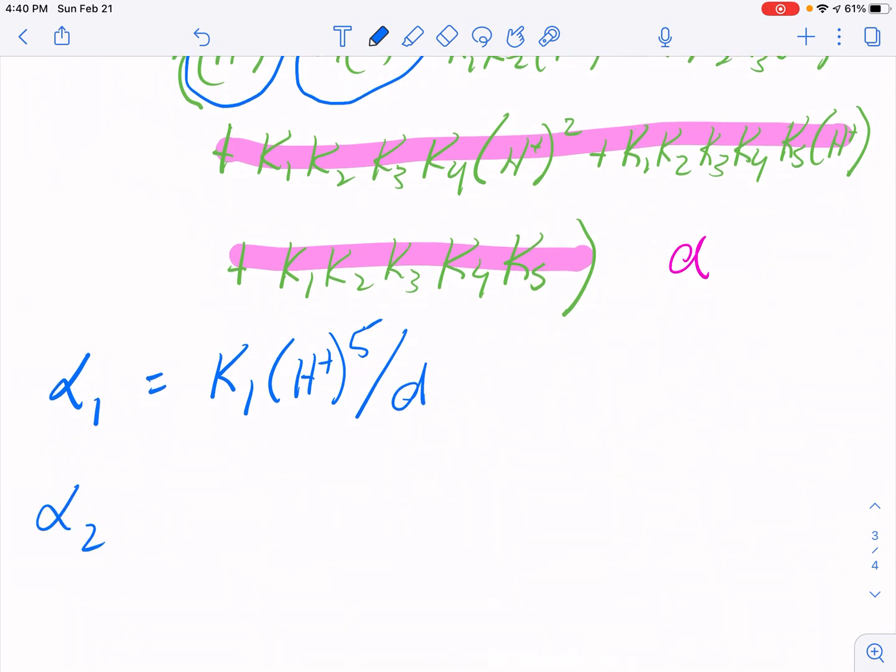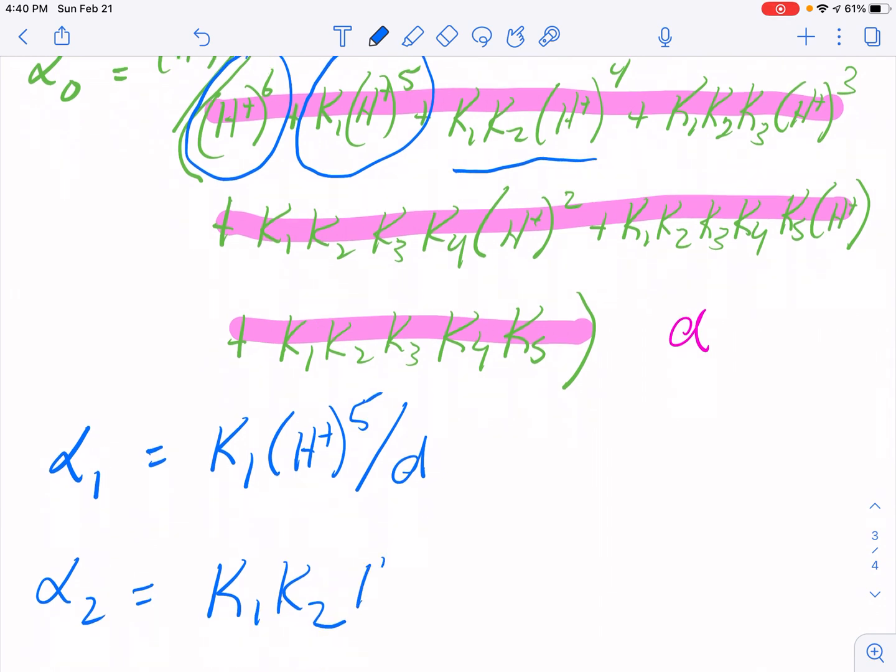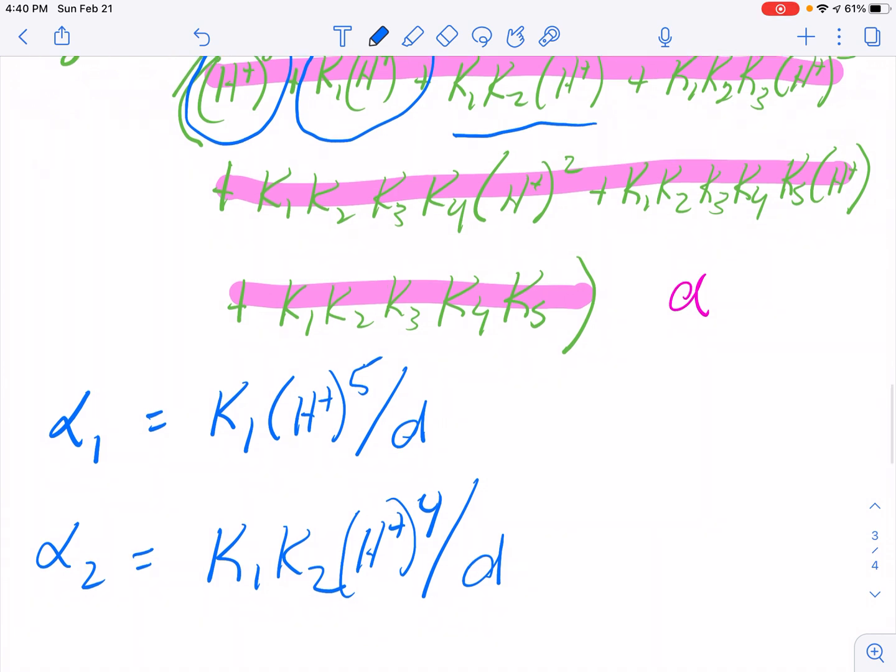Well, let's do alpha two. It's going to be K1 K2, H+ to the fourth over D. And lastly, we'll do alpha six. And it's K1 K2 K3 K4 K5 K6 over D. So I hope you see the pattern.